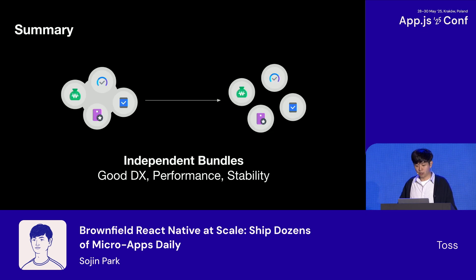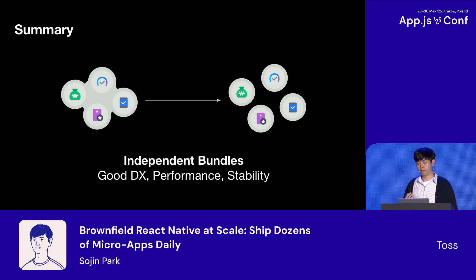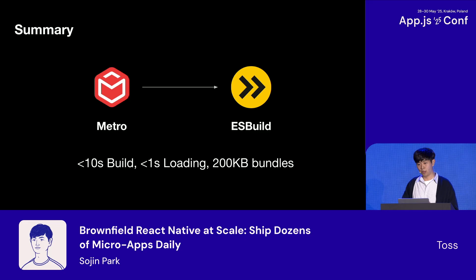To summarize today's talk: to solve the monolithic bundle problem, we split bundles into independent pieces using a two-bundle model, giving us faster build times, better performance, and independent deployments for stability. But Metro wasn't enough for great UX and DX, so we transitioned to ESBuild — giving us builds under 10 seconds, sub-second loading, and 200 kilobyte bundles.